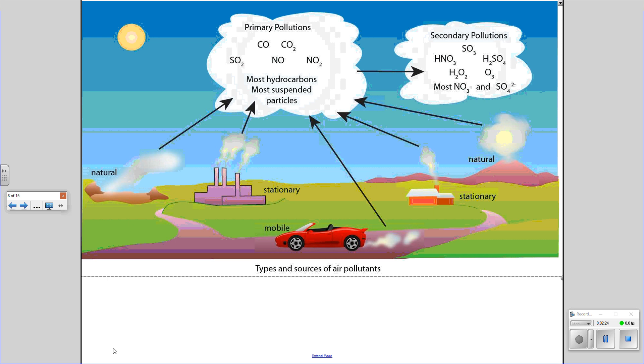In terms of the sources, for example, a natural source would be volcanoes. Volcanoes emit carbon dioxide and also sulfur dioxide. Then you have your stationary sources, which would be anthropogenic, so your stationary sources would be your factories and electric power plants.